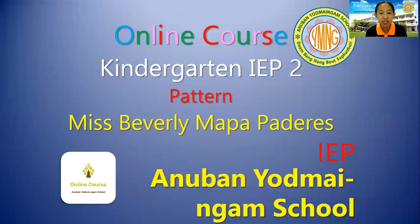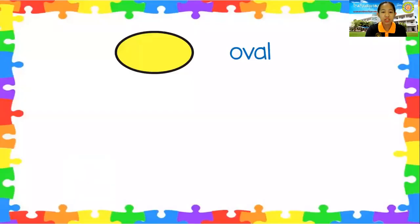We are going to learn about patterns, but before that let's first review the shape that we learned last meeting. What shape can you see? It's oval — very good.